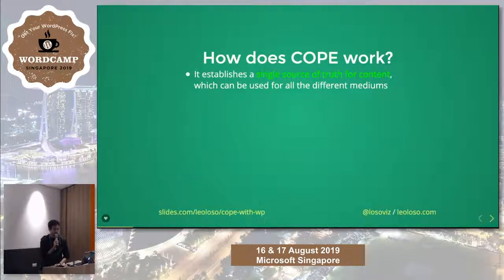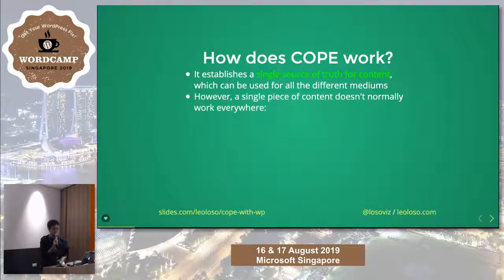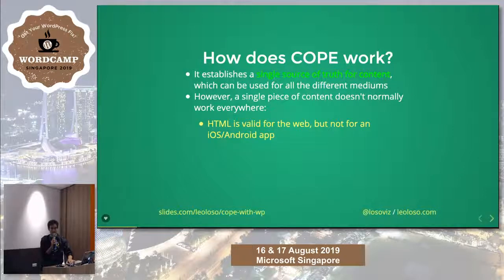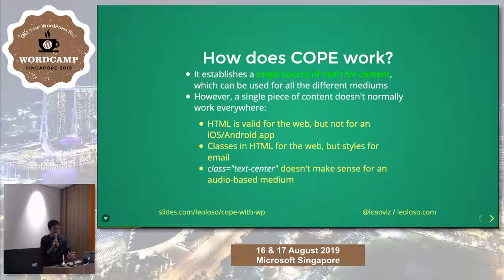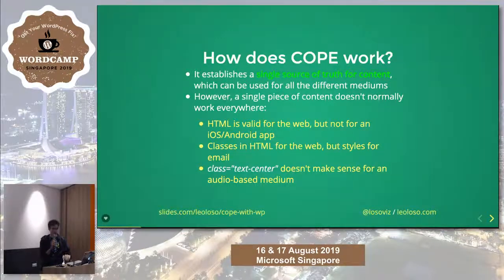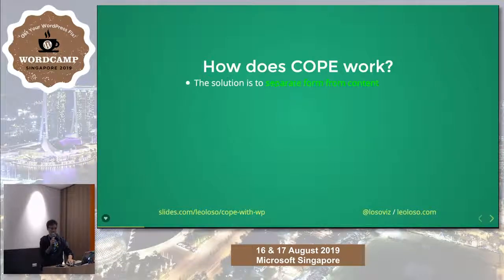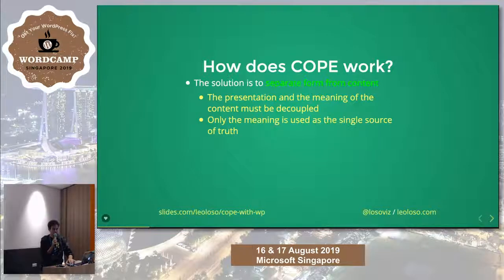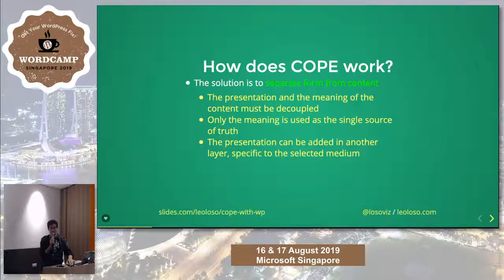So how does it work? It establishes a single source of truth for content, which can be used for all the different mediums. If we have only one single source of truth that works everywhere, we don't need to keep reformatting it for each platform. The problem is that a single piece of content doesn't normally work everywhere. You work with HTML for the web, but you cannot use HTML to make an app. A style like text-center doesn't make sense for an audio-based medium — what does it mean for Amazon Alexa to play content in the middle? So the key is to separate form from content. The presentation and meaning must be decoupled. Only the meaning is used as a single source of truth, and the presentation can be added in another layer specific to that particular medium.